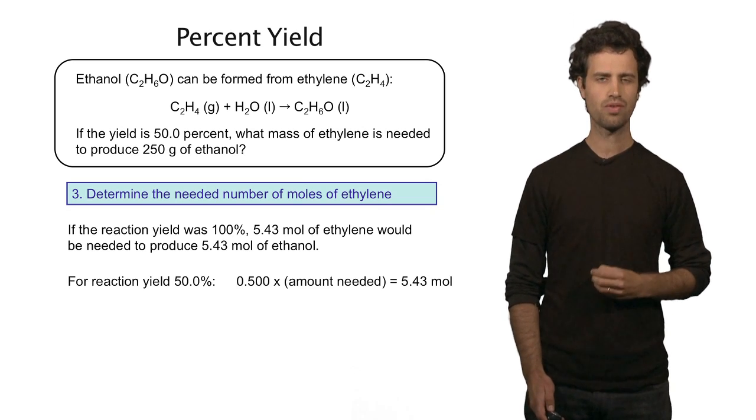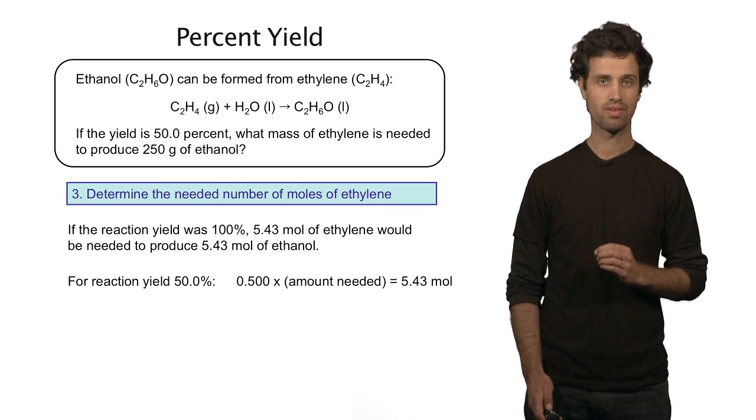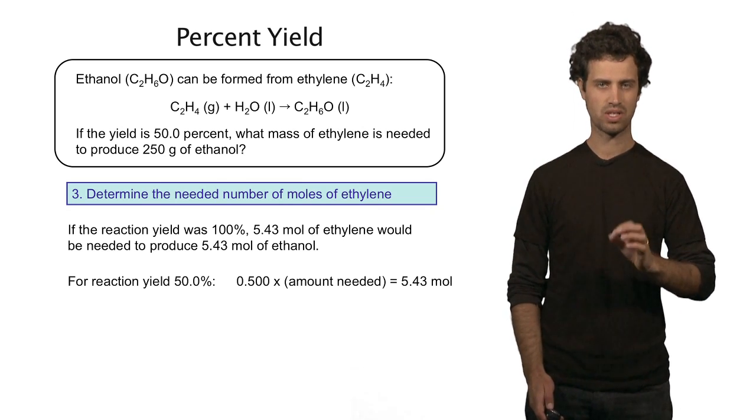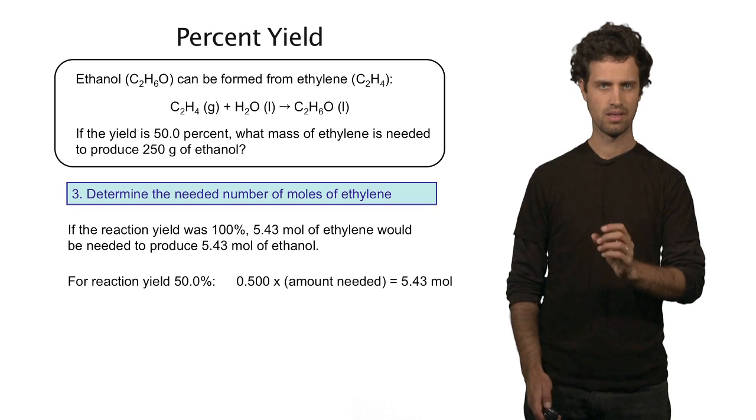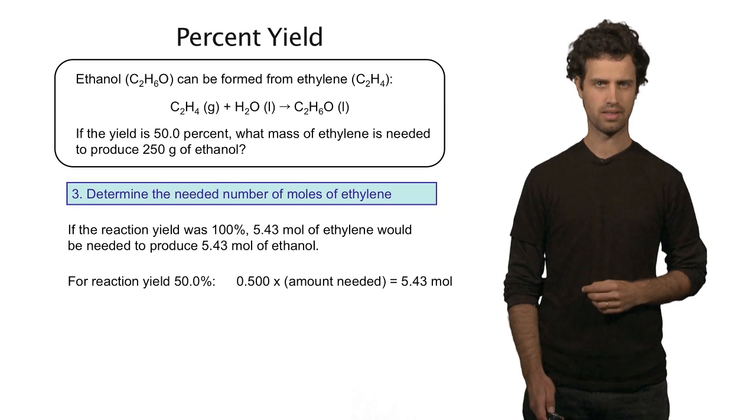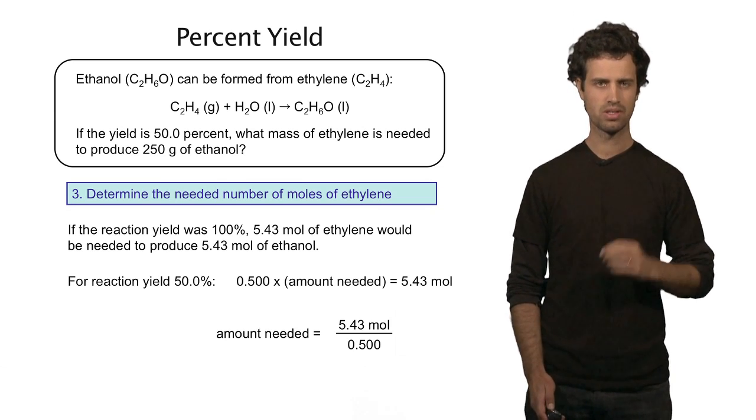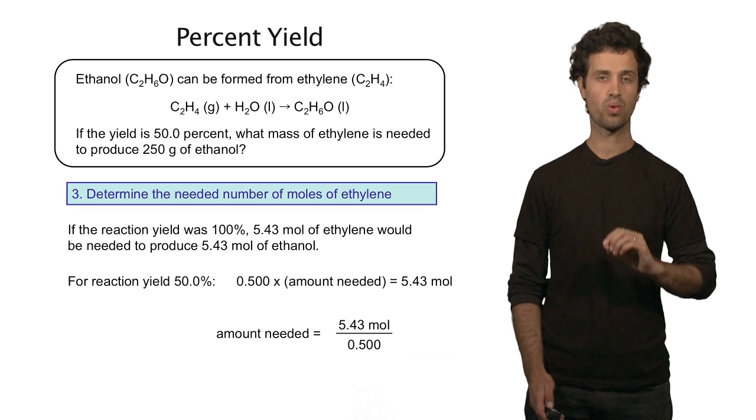However, the reaction yield is 50%. The fraction of 50% is 0.5. So 0.5 times the amount that I need should equal 5.43 moles of ethylene. So the actual amount of ethylene that I need equals 5.43 divided by 0.5, that's a total of 10.9 moles.